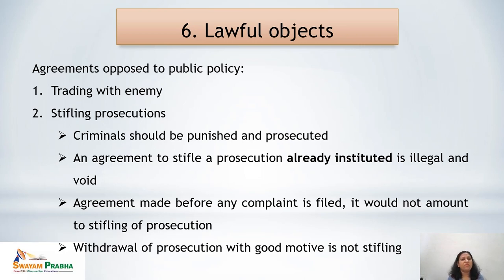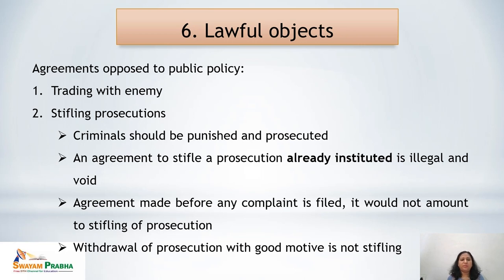If any party is trading with an enemy country, this is against public policy. For example, if when the contract was made there was peace between two countries and parties A and B made a contract, but before performance war broke out, both parties have two options: either suspend their performance or dissolve the contract. Any trading or contract with an enemy country is counted as opposed to public policy. Next is stifling prosecutions: any agreement to stifle a prosecution is considered opposed to public policy.